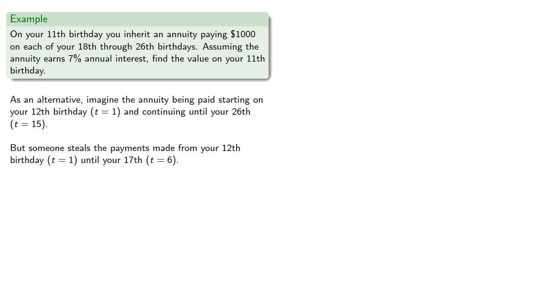So again, using the same value for v, our present value will be the total value of all 15 payments minus the payments that were stolen.